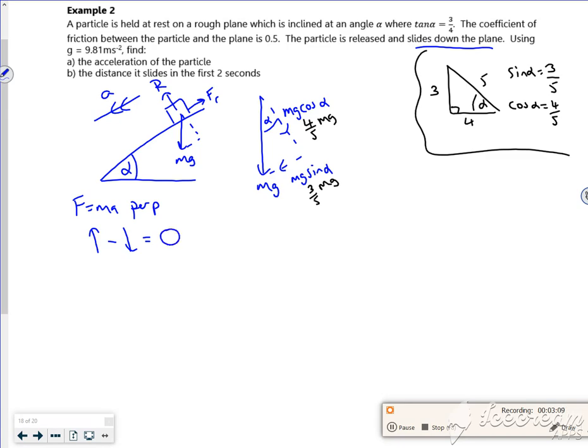So the force going upwards is R, and going against R is your four over five mg. So R is four fifths of mg.